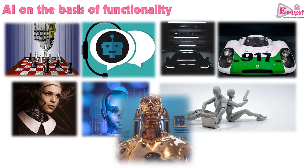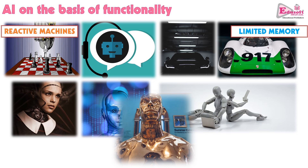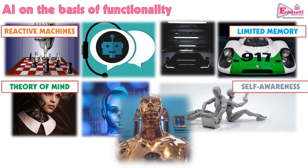The second basis of artificial intelligence types is functionality. If we look at the functionality which can be seen in machines, we have different types of artificial intelligence. These are basically called reactive machines, limited memory machines, theory of mind, and self-awareness.